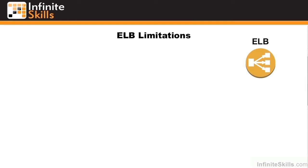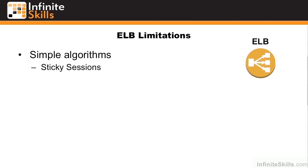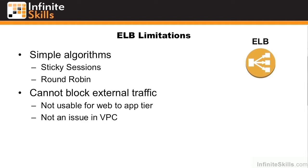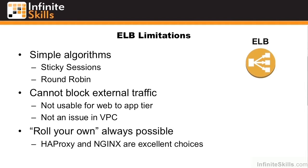The ELB does come with some pretty strict limitations. It has very simple algorithms — you can either choose sticky sessions, where users talk to only a single EC2 instance, or round-robin among the instances, which is preferred. You want to avoid state or sticky sessions in your architectures. It also cannot block external traffic, making it a poor choice for balancing in the web-to-app tier. This wouldn't be an issue in your VPC, since your VPC can be locked down to only specific traffic. You can also roll your own load balancer at any time, with HAProxy and Nginx being the most popular choices.